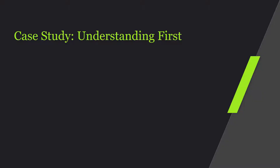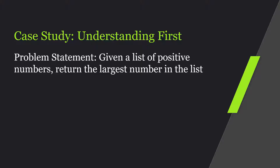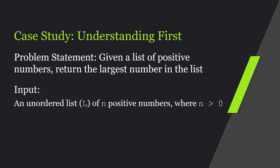Let's go through a little case study to understand how this process is going to flow. The first thing we want to do whenever we're given a problem is understand it — know what assumptions we might have and what the requirements are so we can figure out the steps to solve it. Take this problem: given a list of positive numbers, return the largest number in the list. The input to this problem would be an unordered list L of n positive numbers where n is greater than zero. From the problem statement, I identified that there was no ordering to the list — it's just unordered.